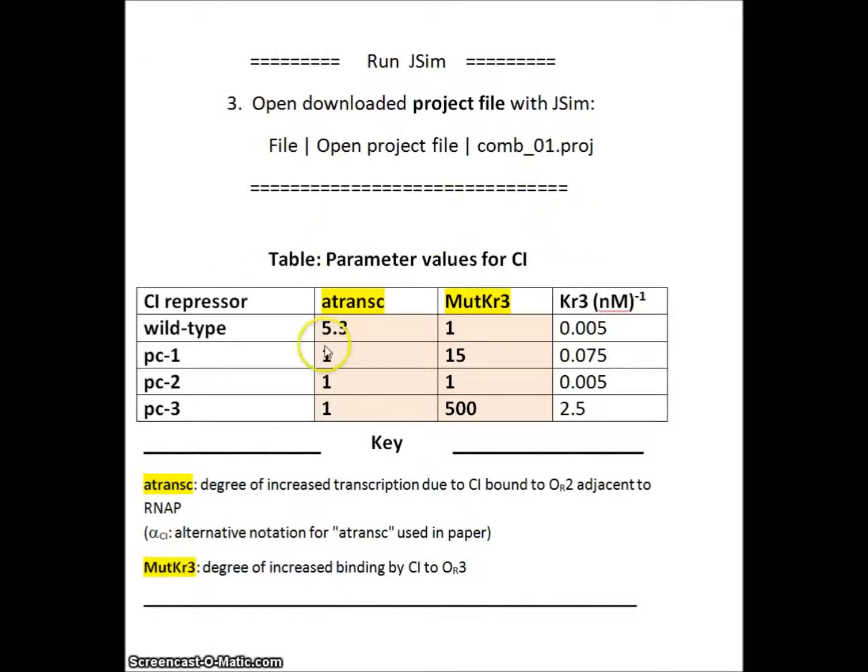We modeled this by changing these parameters, the activation parameter and the mutation parameter. This is the degree of activation by wild type and the mutants have all lost that ability and have no degree of activation.